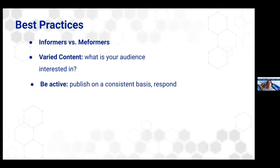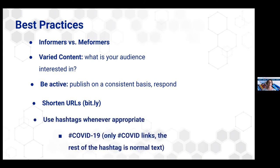Be active — publish on a consistent basis and respond to people. Shorten your URLs: when you have a URL to your research, you can go to bit.ly to shorten your link, which helps with the character count and also gives you analytics on how many people have clicked it. And use hashtags wherever appropriate. Hot tip: if you are sharing something about COVID, if you do COVID-19, only 'COVID' will link in the hashtag, not the dash — so just make it all one word: COVID19. We'll talk about hashtags more in a bit and how not to over-hashtag.